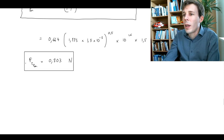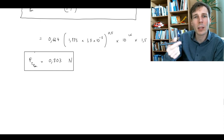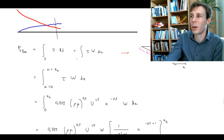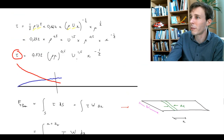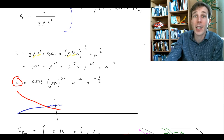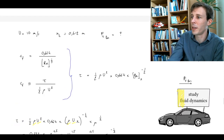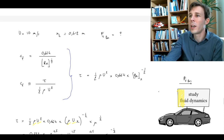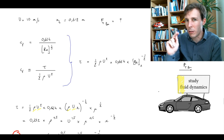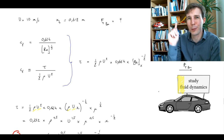0.2 Newtons is a very small number — not even the weight of a pen. The friction on this board is not very high because the car is only moving at 10 m/s, which is 36 km/h, the speed of a fast bicycle. To this we'll still have to add the friction from the turbulent part of the boundary layer, which will be covered in the next video.